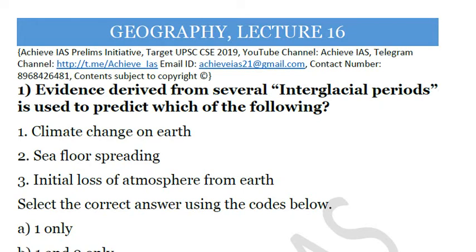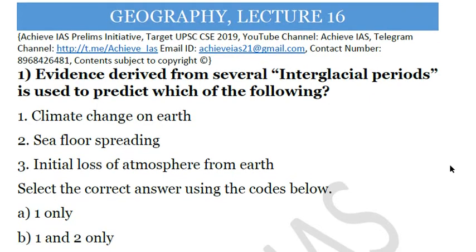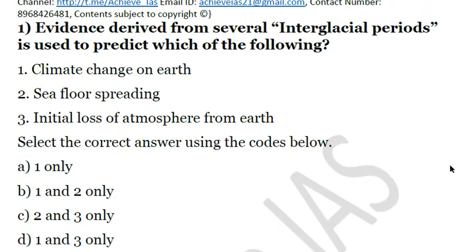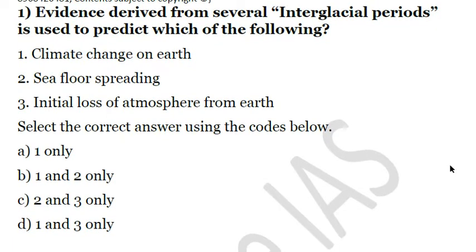Let's start our discussion. Today we will be covering Geography lecture number 16. First question: evidence derived from several interglacial periods is used to predict which of the following? One, climate change on earth. Two, seafloor spreading. Three, initial loss of atmosphere from earth. Interglacial periods basically tell us about climate change on earth, so only the first statement is correct. The answer is A.